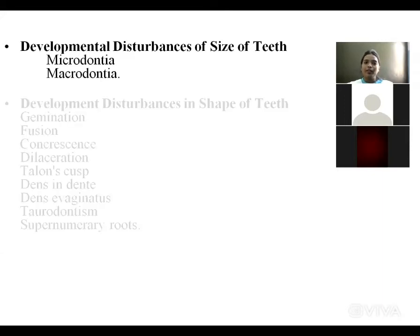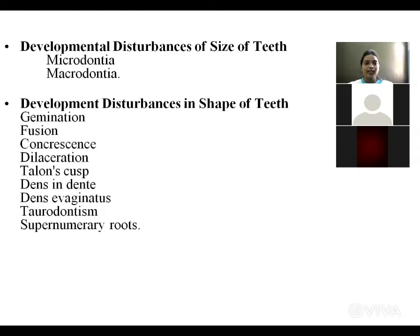Developmental disturbances in the shape of teeth include gemination, fusion, concrescence, talon's cusp, talon's cusp, dens evaginatus, dens invaginatus, taurodontism, and supernumerary roots.